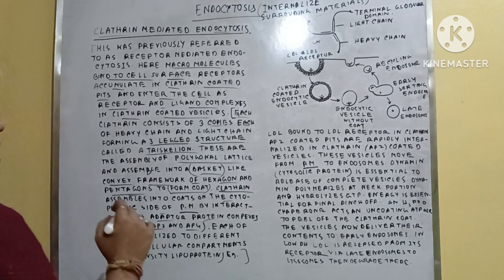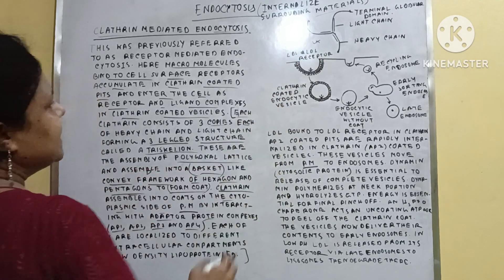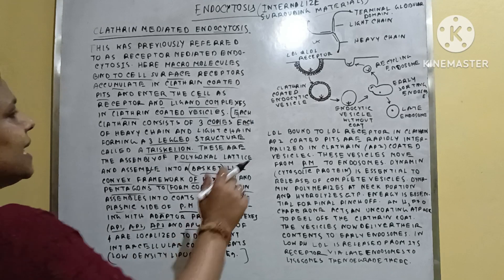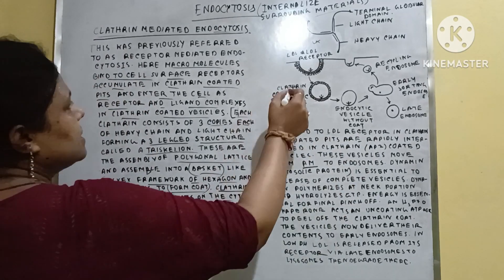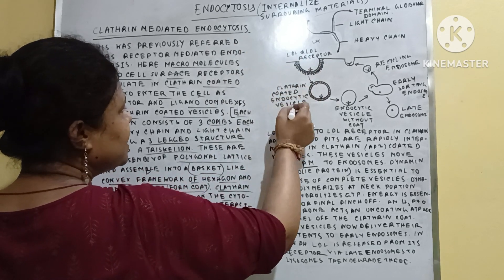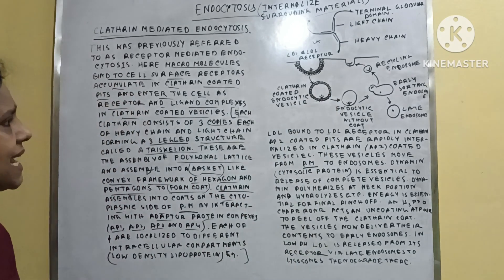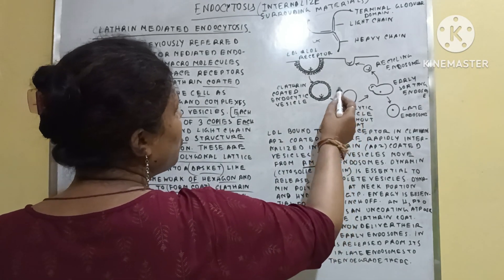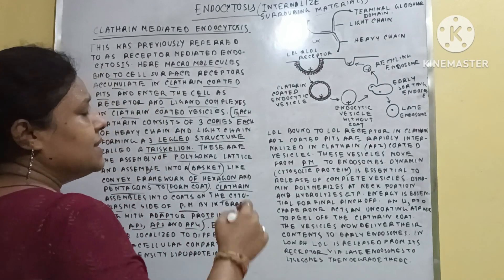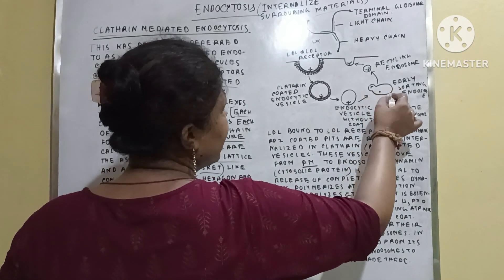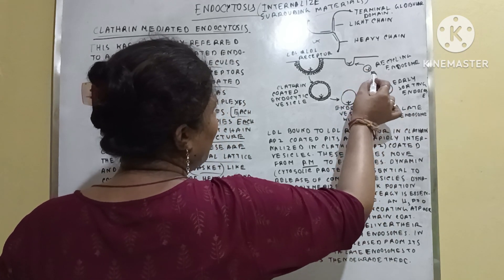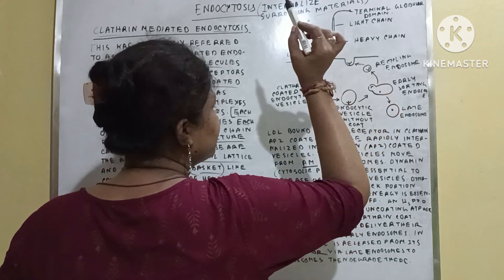The example here is LDL and the LDL receptor. First, LDL binds to the LDL receptor. This LDL receptor and LDL content then pinch off together as a clathrin-coated endocytic vesicle. The coat is then released from the endocytic vesicle, the content with the endosome is released, and the receptor moves back towards the plasma membrane.